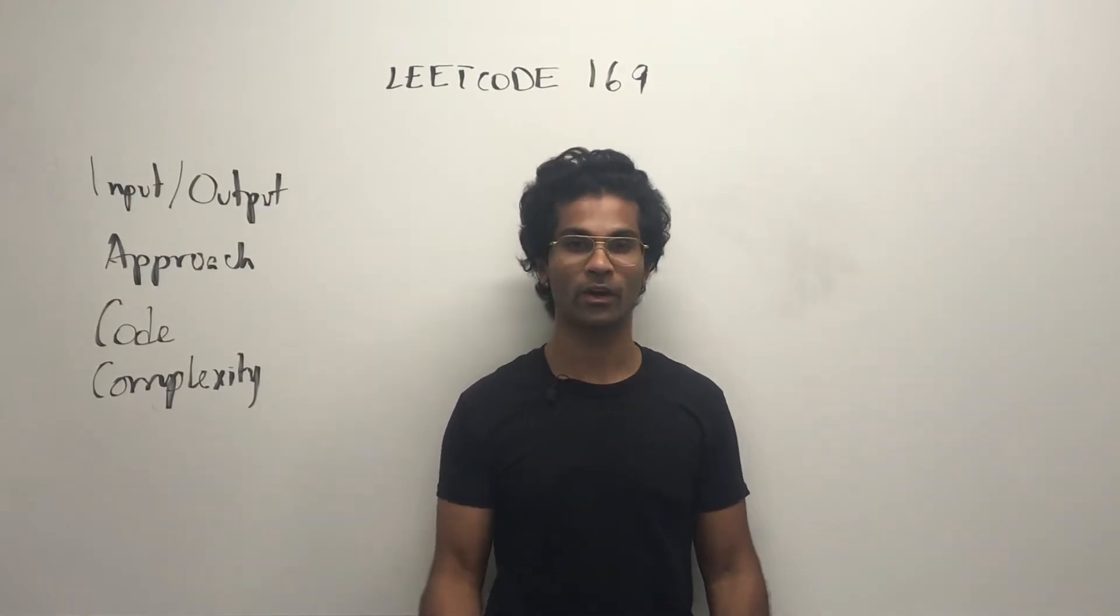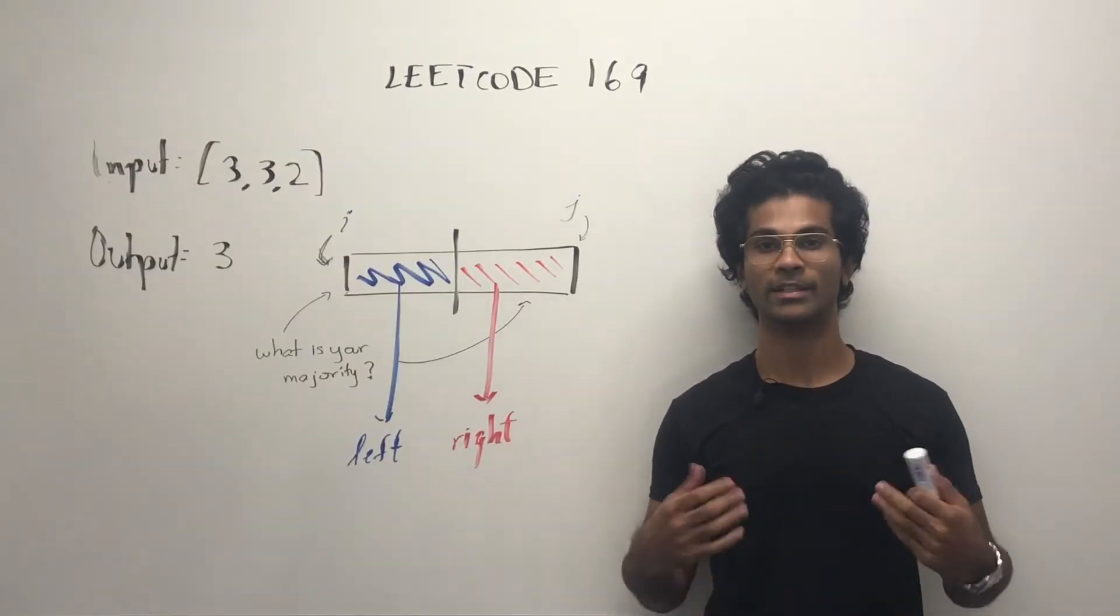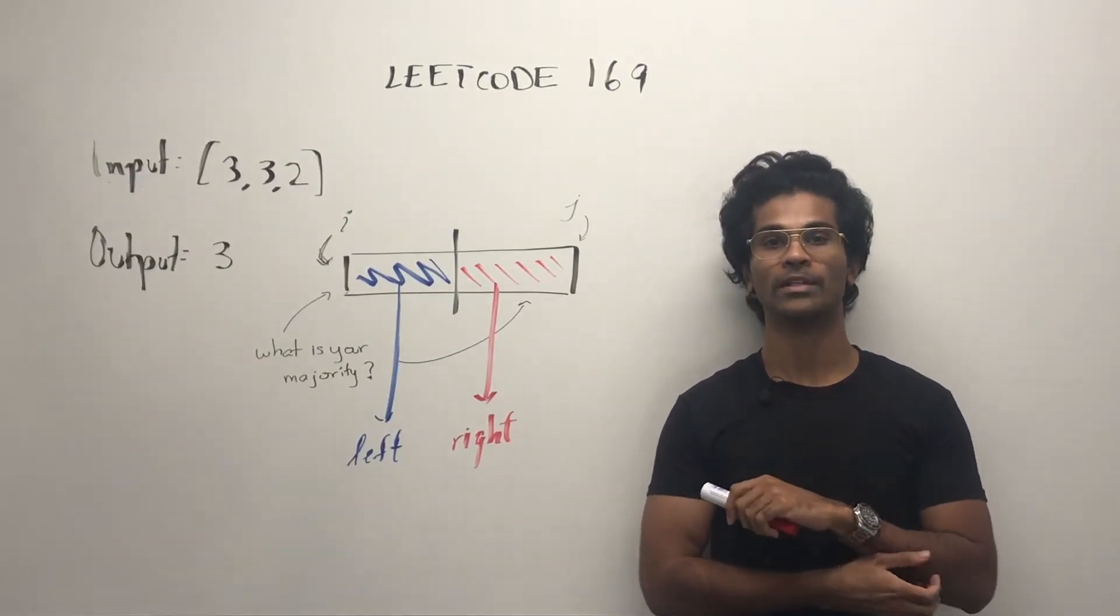We'll be doing divide and conquer, and finally we'll look at the code. So the input is going to be an integer array, and the output is going to be an integer.